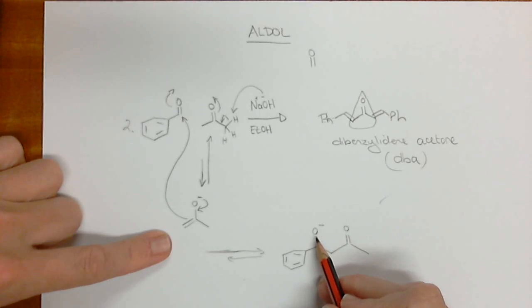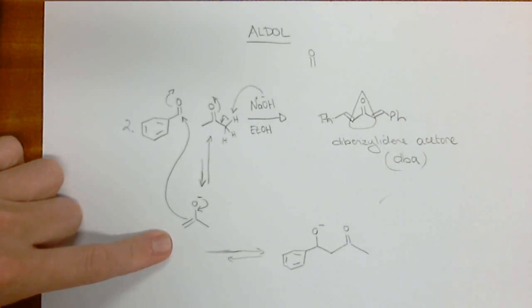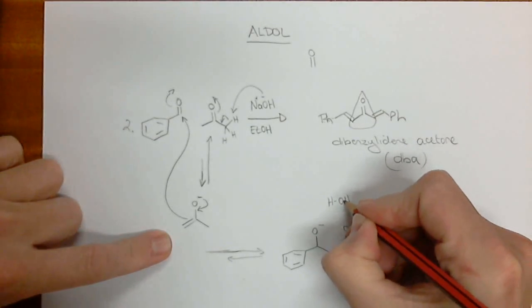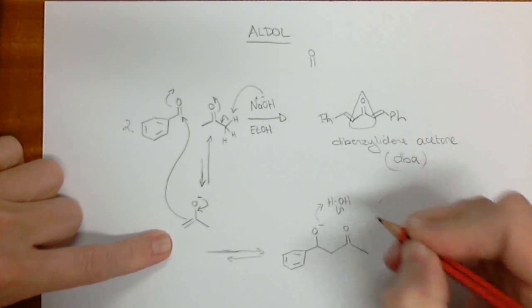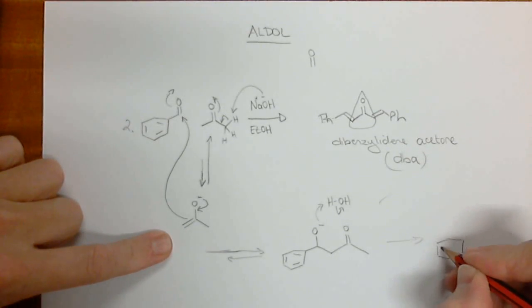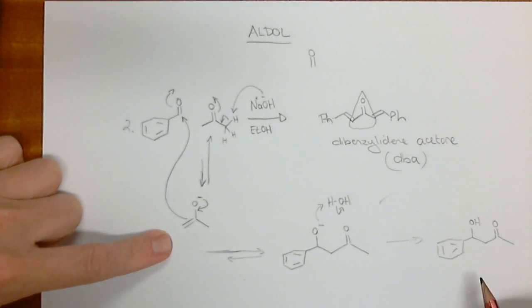This O- can now pick up a proton from the environment. Notice that the OH picked up a proton over here, forming water, so we do have water present. So water can now donate its proton back, and we get OH- being formed. And so we end up with this compound here, which is the typical product of a base-catalyzed aldol reaction.